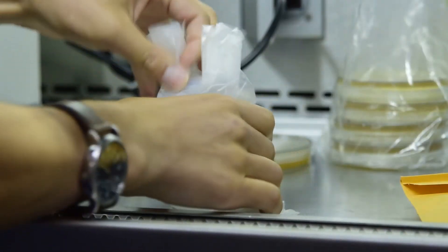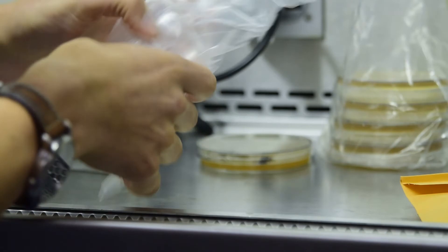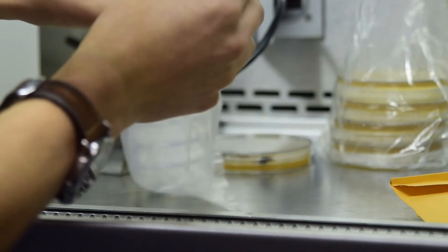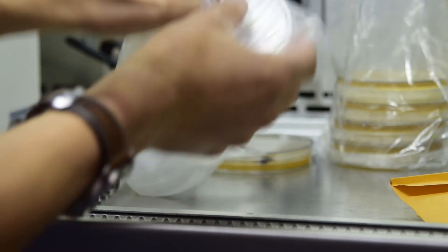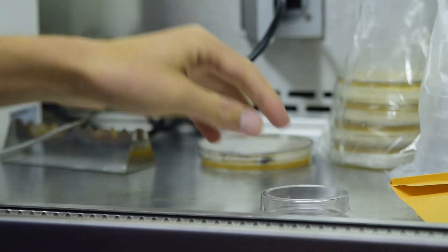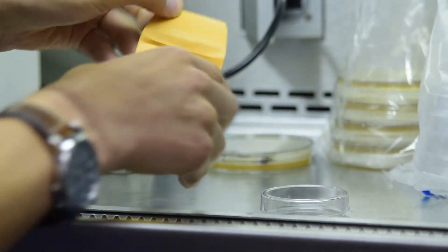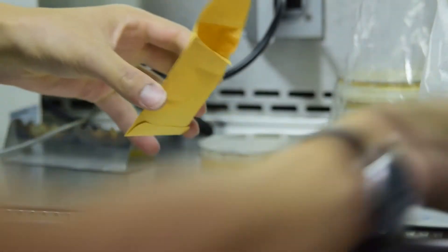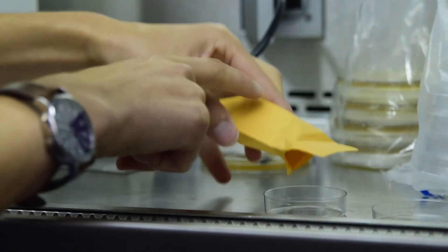Next, we will do a chitin baiting plate using an empty 60mm dish. Add dry soil to the plate, approximately one gram or more.